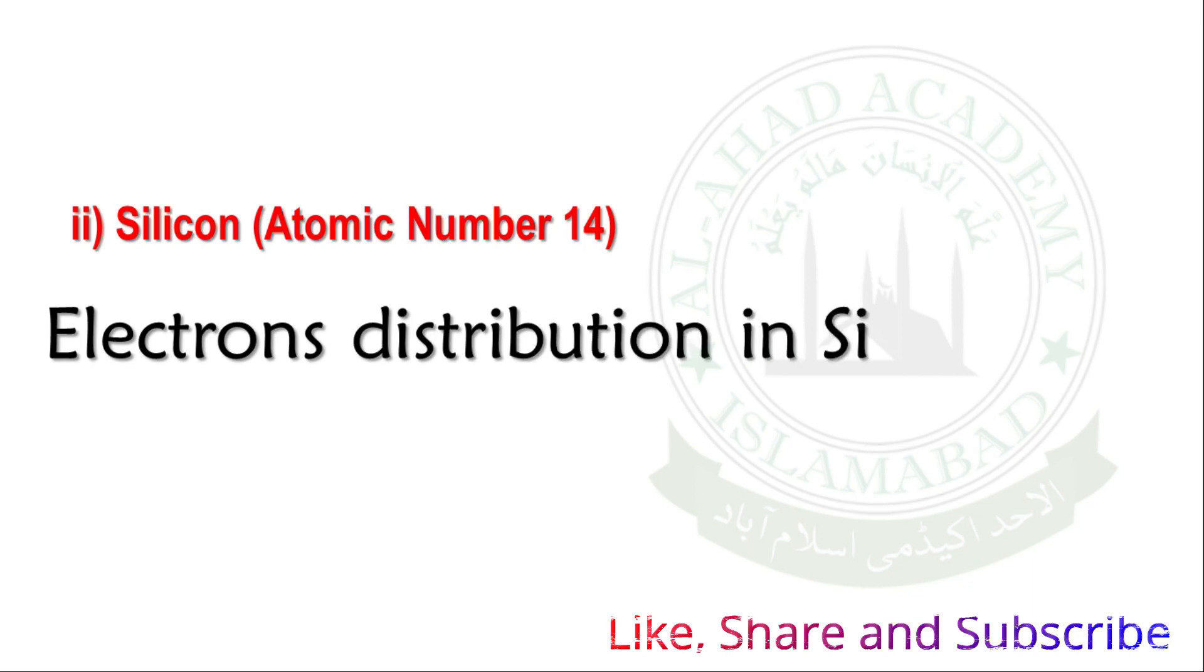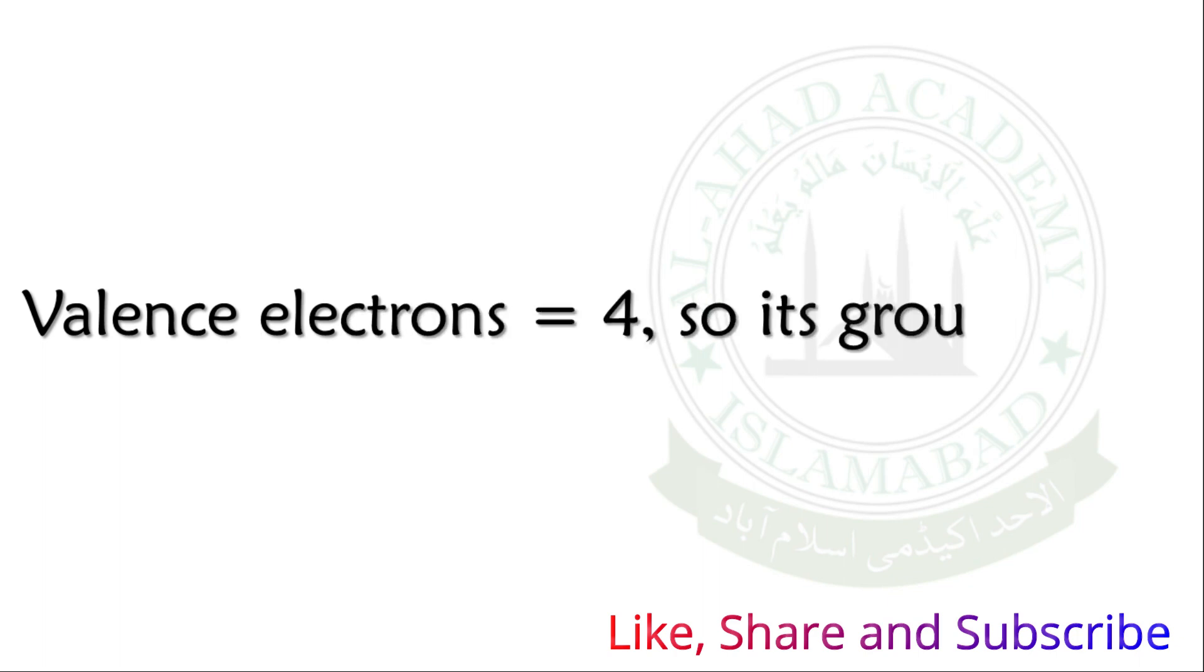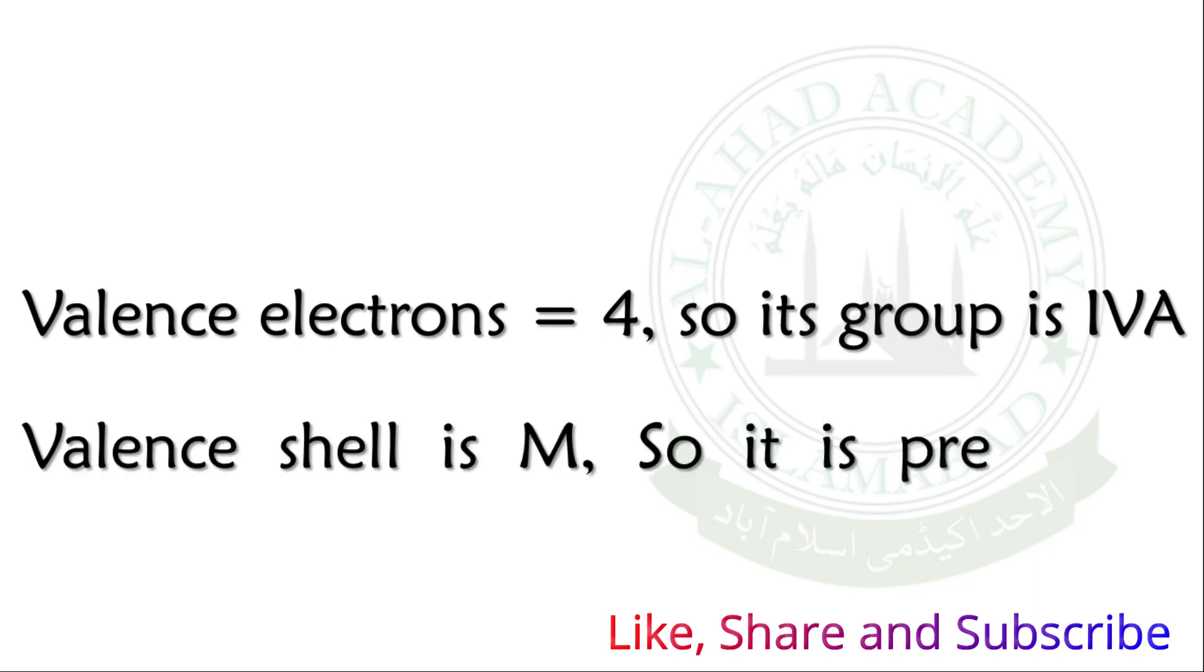Electronic distribution in Silicon atomic number 14: First shell is 2 electrons, second shell is 8, and third shell is 4 electrons. The valence shell has 4 electrons. So Silicon is in group number 4. With 3 total shells, Silicon is in period number 3.